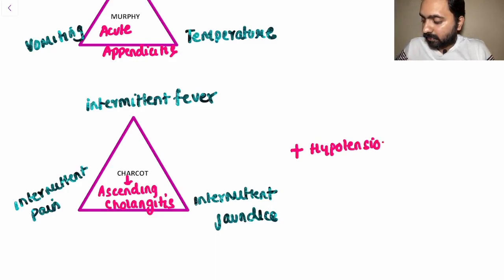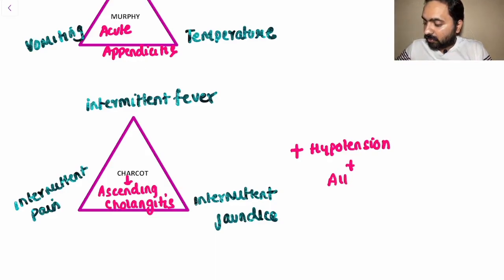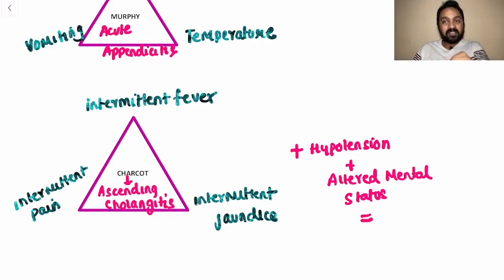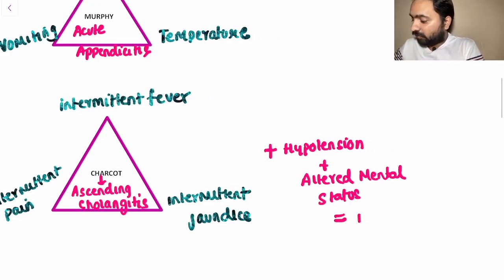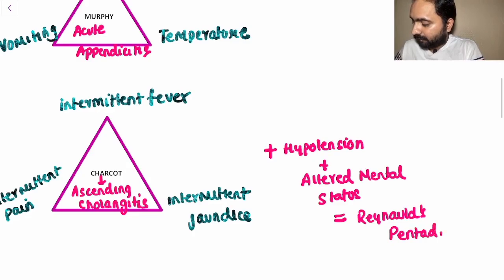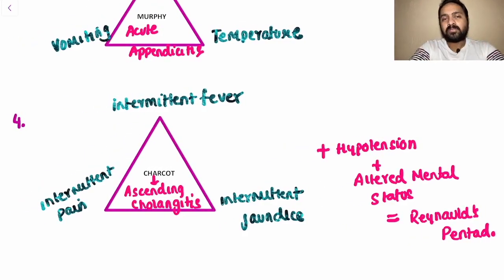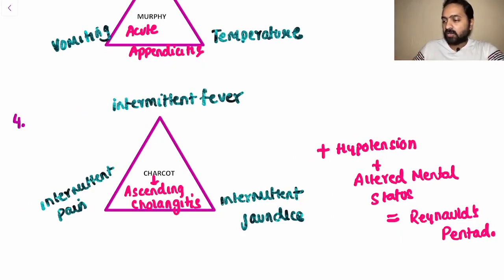An important additional point: if to Charcot's Triad you add hypotension and altered mental status, this forms another important entity known as Reynolds' Pentad.